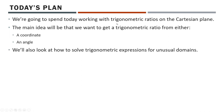We're going to spend today working with trigonometric ratios on the Cartesian plane — your x and y grid. The main idea is to get a trigonometric ratio from either a coordinate or from an angle. If you have a coordinate on the Cartesian plane that an angle in standard position goes through, you need to figure out how to get a trig ratio from that. Likewise, if given an angle in degrees or radians, you'll need to get a trig ratio from it. We'll also look at how to solve trig expressions for unusual domains — where instead of 0 to 360 degrees or 0 to 2π radians, you'll have some other domain.